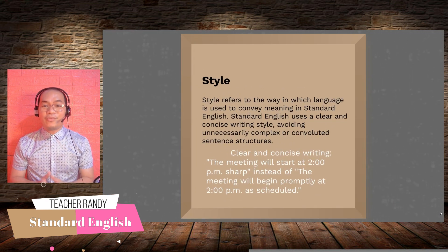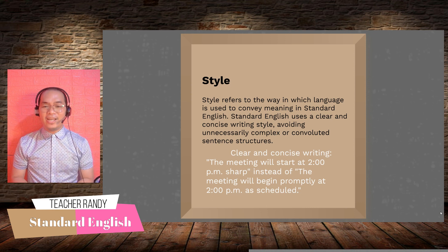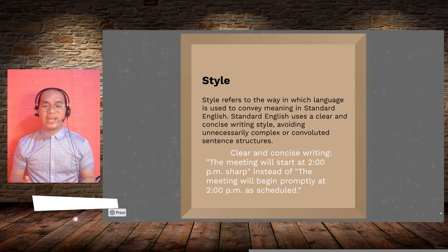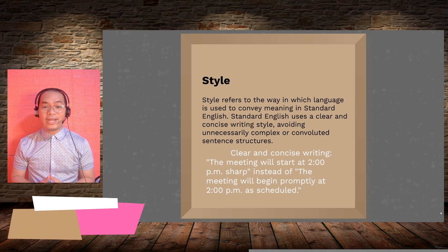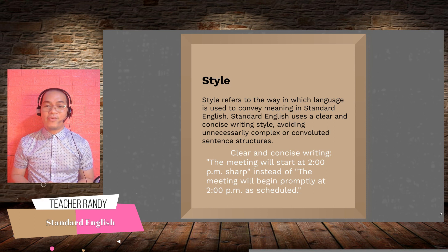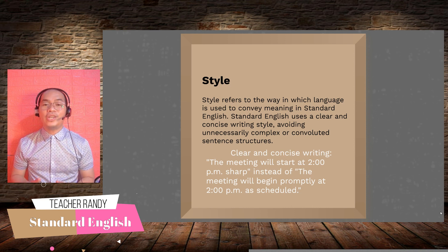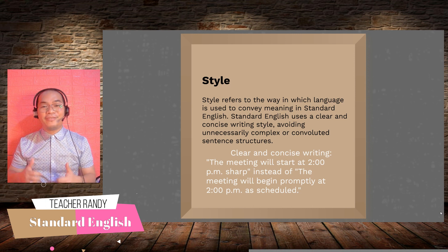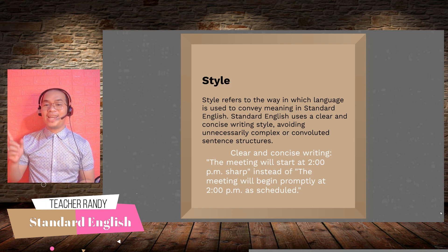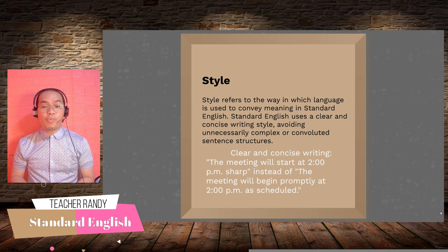Style refers to the way in which language is used to convey meaning in Standard English. Standard English uses a clear and concise writing style, avoiding unnecessary complex or convoluted sentence structures, which helps to ensure that communication is clear and effective. For example, for clear and concise writing, we say: 'The meeting will start at 2 p.m. sharp,' or 'The meeting will begin promptly at 2 p.m. as scheduled.'